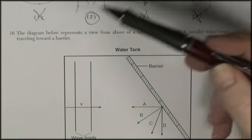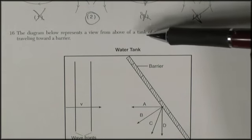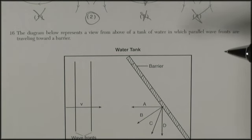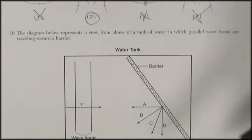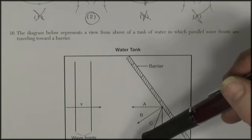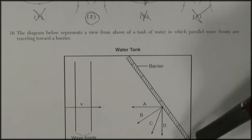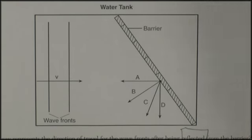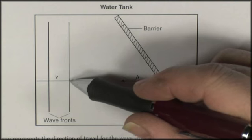Question 16. The diagram below represents a view from above of a tank of water in which parallel wavefronts are traveling towards a barrier. Which arrow represents the direction of travel from the wavefronts after being reflected? So in this question, the waves are coming in this way,